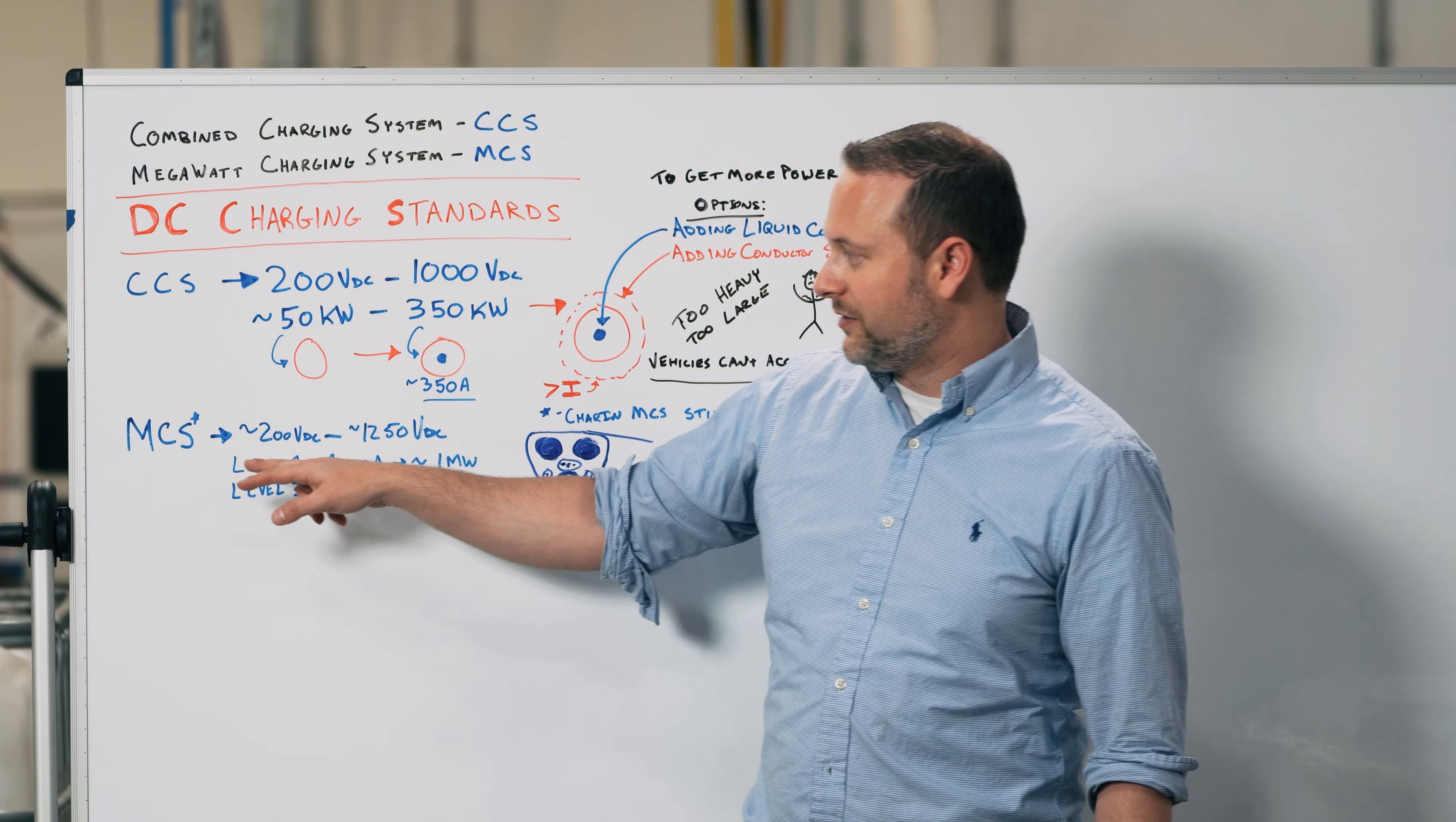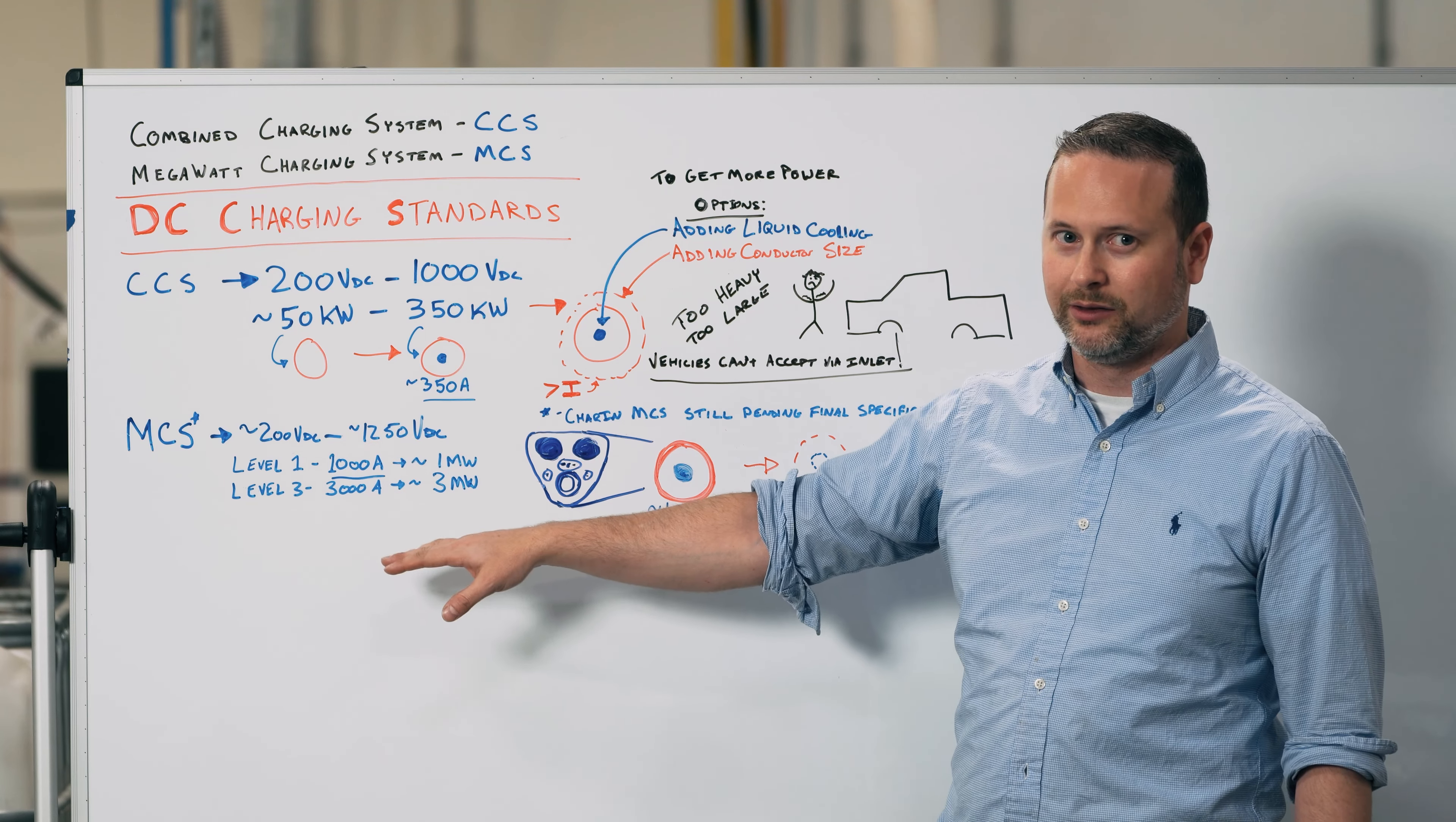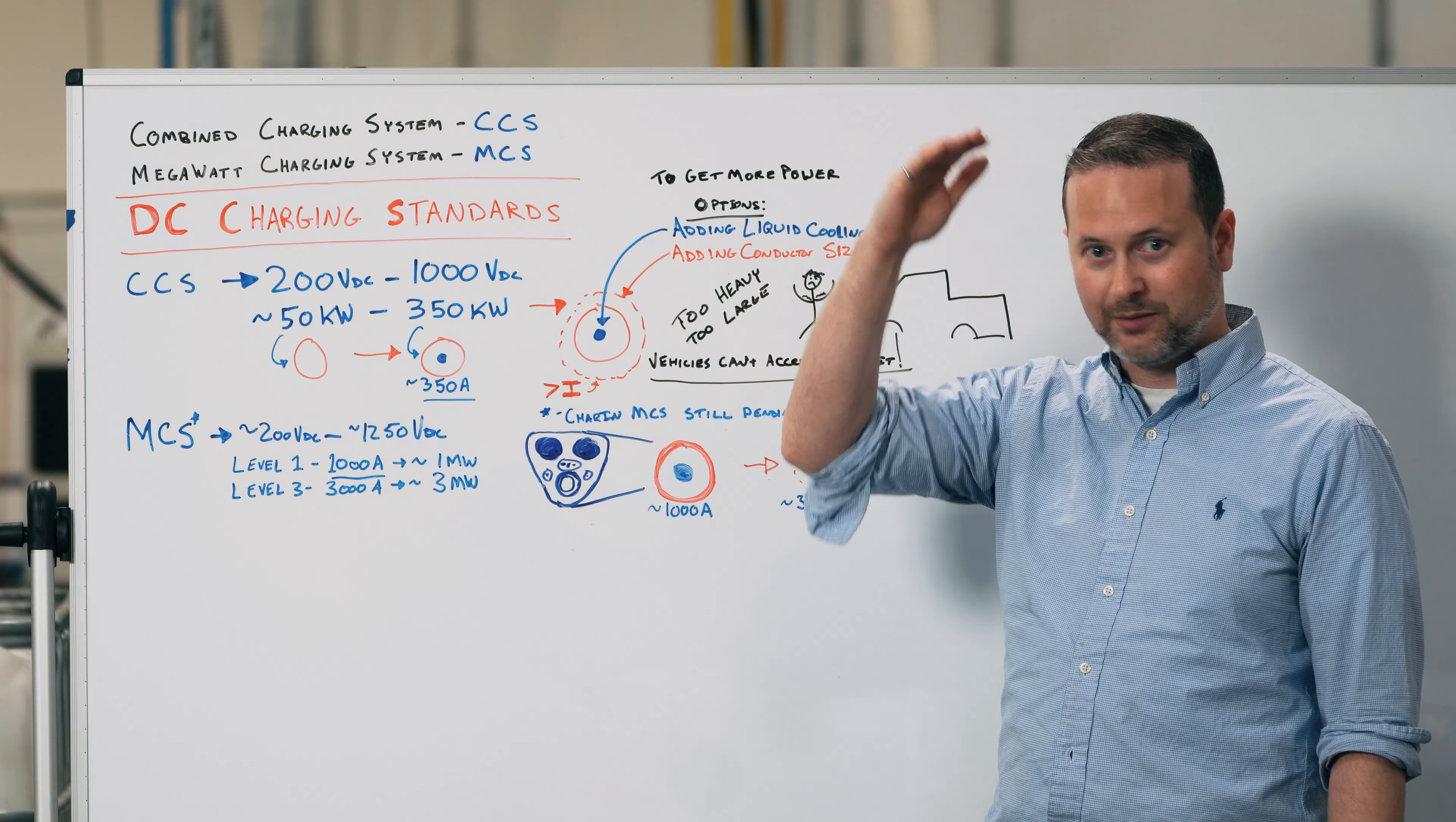In current development, you have a level 1, a level 2A, a level 2B, and a level 3. I'm just going to talk about level 1 and level 3 DC charging for megawatt charging from the bottom and the top.